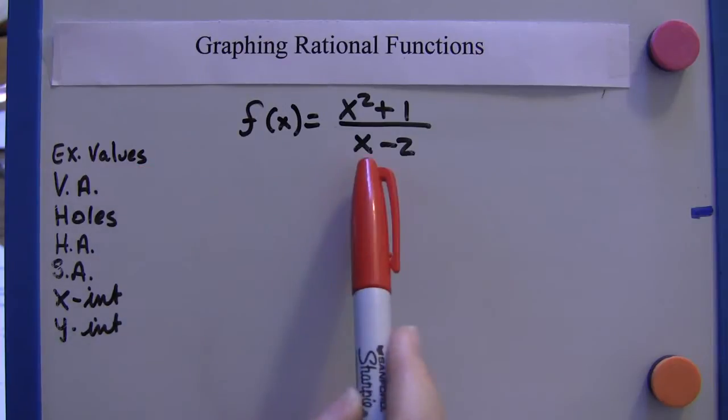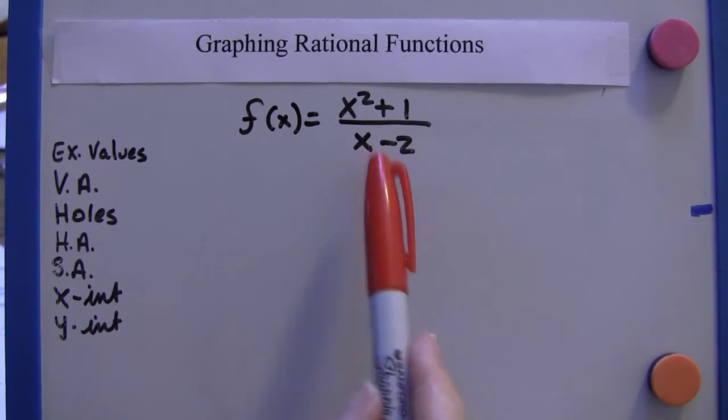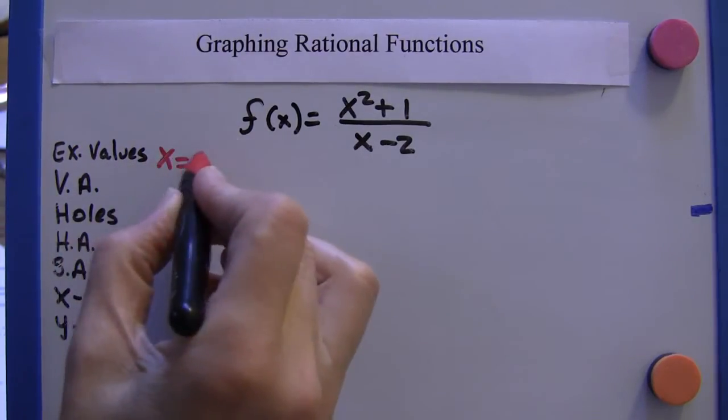Let's look for excluded values. The denominator can't be zero. If x were two, that would make it zero. So we have an excluded value at x equals two.